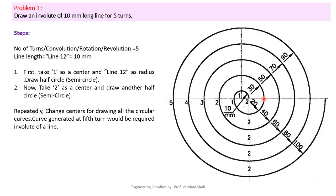Now change the center back to point 1. This point 1 is our center, and we take the radius from point 1 to the new end point. Draw another arc, which gives another 180 degrees — another half turn. Then change the center to point 2, take radius 2 to that end point, and draw another arc ending on the horizontal line. We have now traveled through another 180 degrees, completing a total of 2 turns.